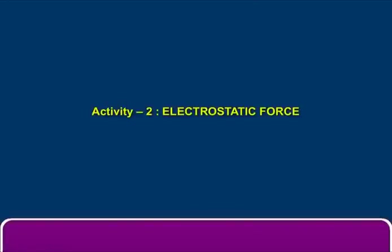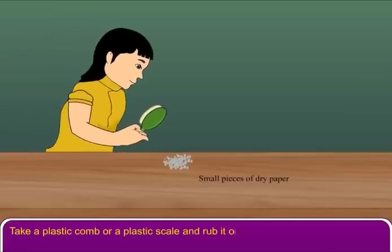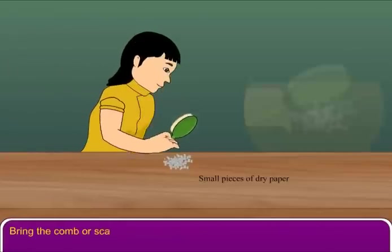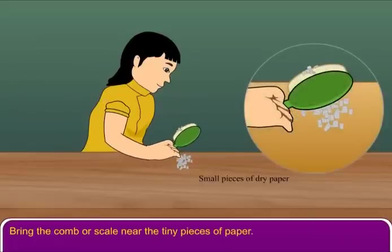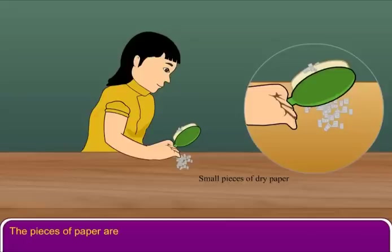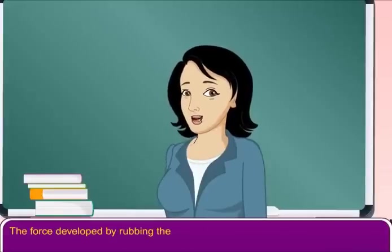Activity 2. Take a plastic comb or a plastic scale and rub it on your hair for a minute. Bring the comb or scale near the tiny pieces of paper. What do you observe? The pieces of paper are attracted towards the comb or the scale. The force developed by rubbing the comb or scale is called electrostatic force.